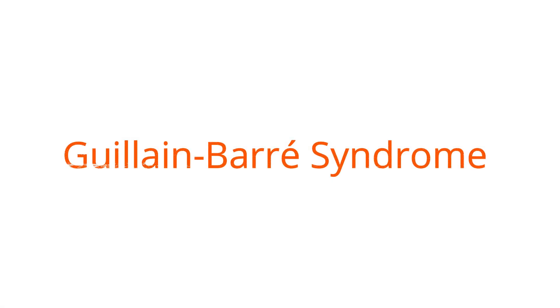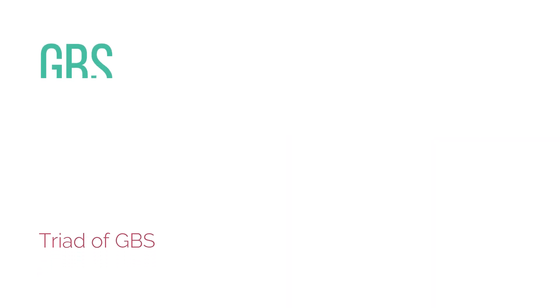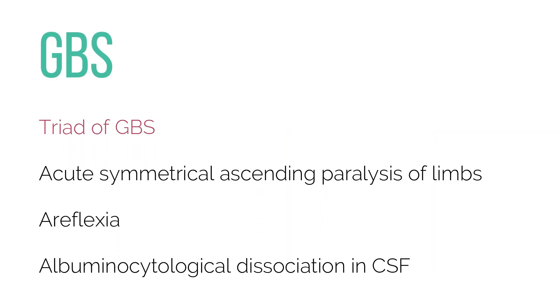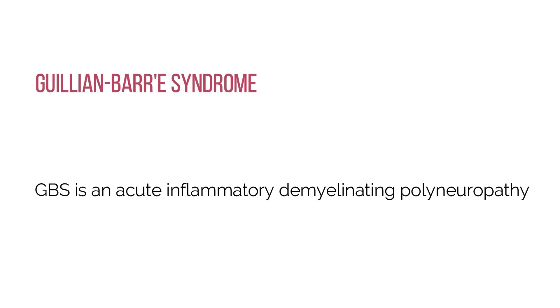In this video we will talk about Guillain-Barré syndrome. A triad of acute symmetrical ascending paralysis of limbs, along with areflexia and albuminocytological dissociation in CSF is suggestive of Guillain-Barré syndrome. Guillain-Barré syndrome is an acute inflammatory demyelinating polyneuropathy.